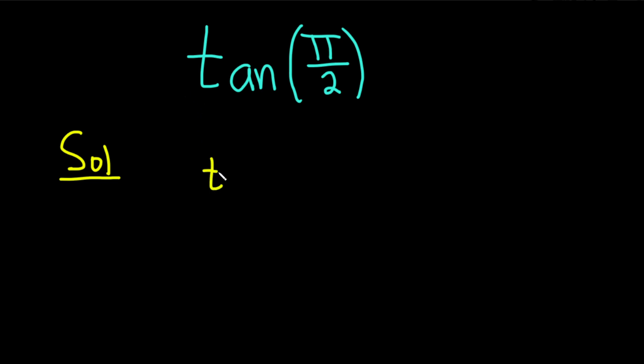So the tangent of pi over 2, we can write this as sine over cosine. So this is the sine of pi over 2 divided by the cosine of pi over 2.